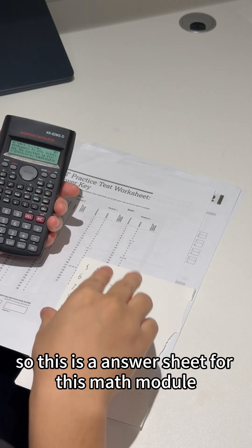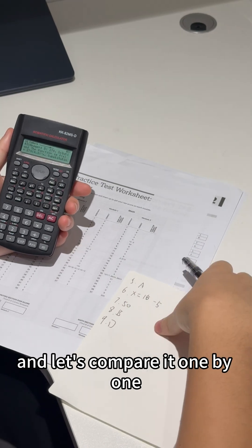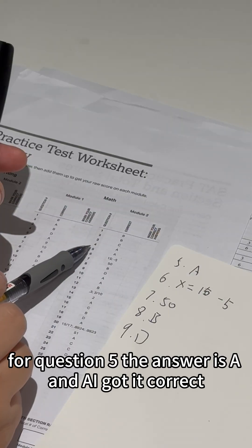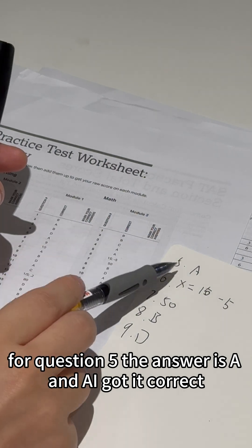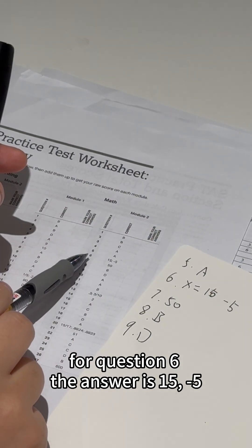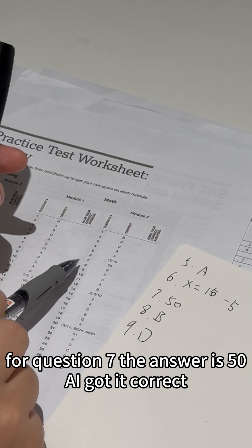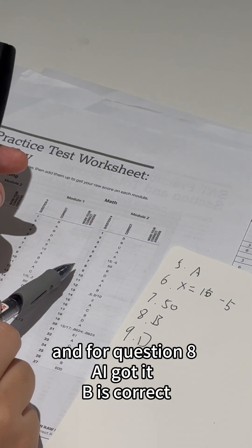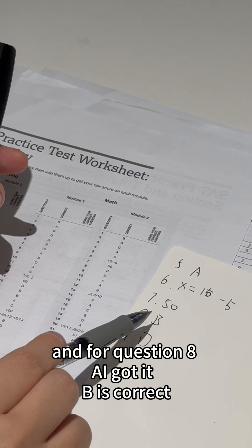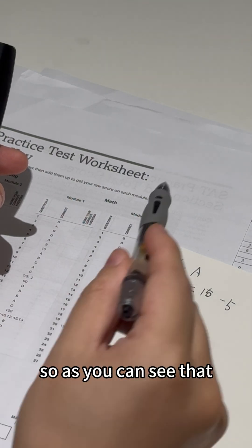So this is an answer sheet for this math module, and let's compare it one by one. For question five, the answer is A, yeah I got it correct. For question six, the answer is 15 negative 5, yeah I got it correct. For question seven, the answer is 50, yeah I got it correct. For question eight, it's B, correct. And for question nine, 50. As you can see, Seven Cal can almost handle any questions no matter what question it is.